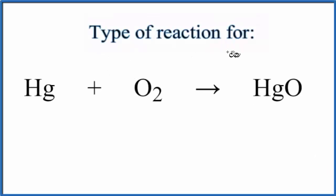In this video, we'll take a look at the type of reaction for Hg plus O2 yields HgO. This is mercury plus oxygen gas, and it's giving us this mercury oxide.